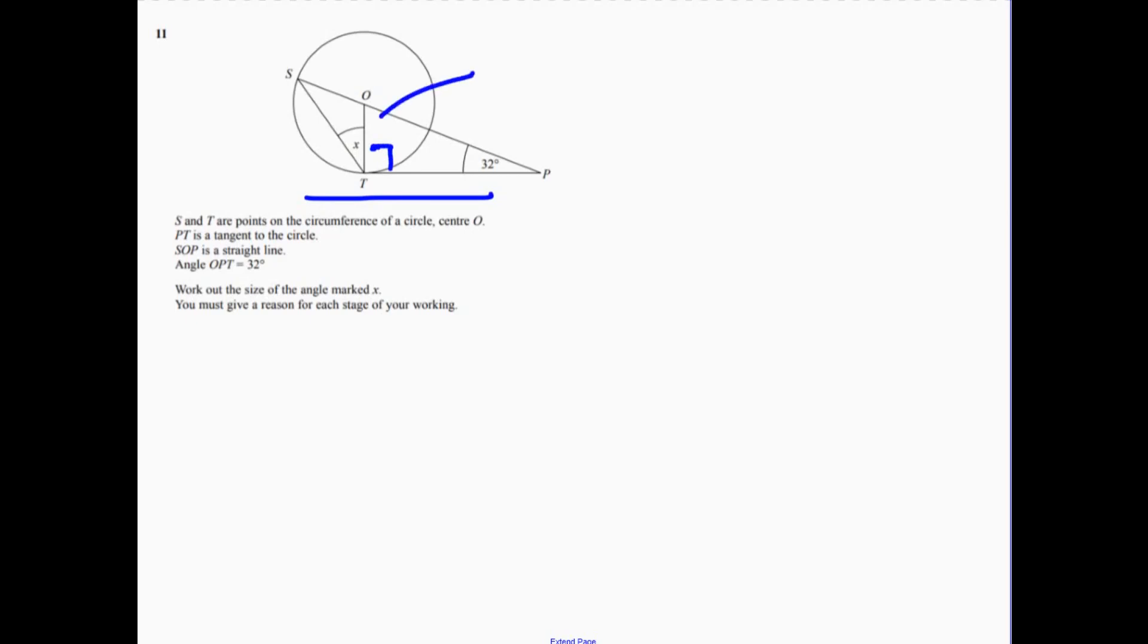And we need to make it clear. It does say give a reason at each stage. So number one, we'd want something like tangent results in right angle.